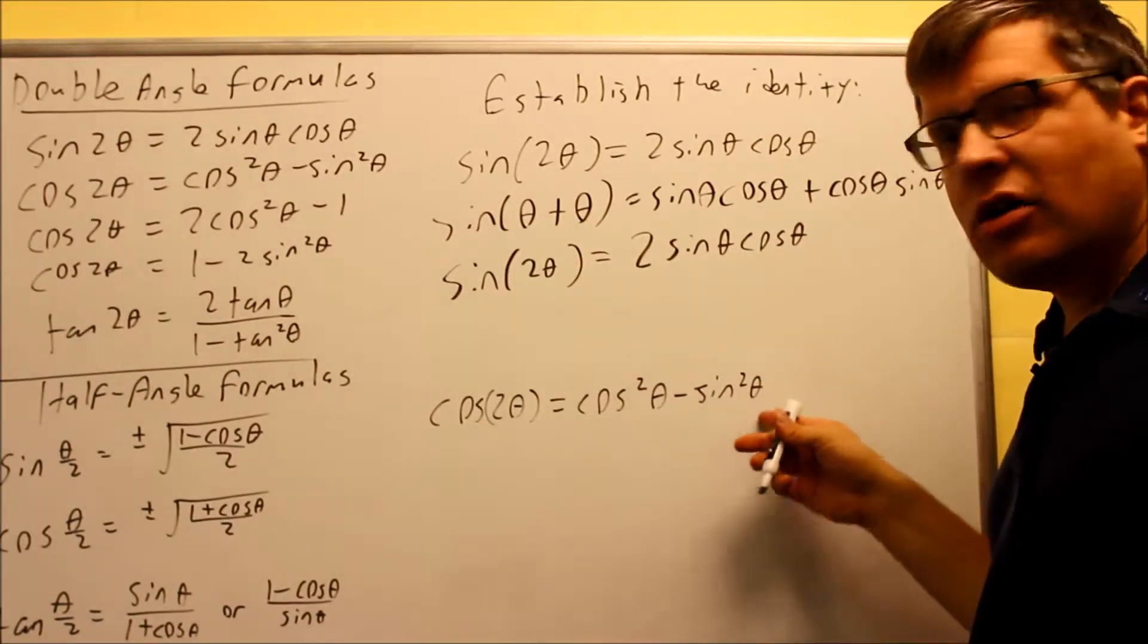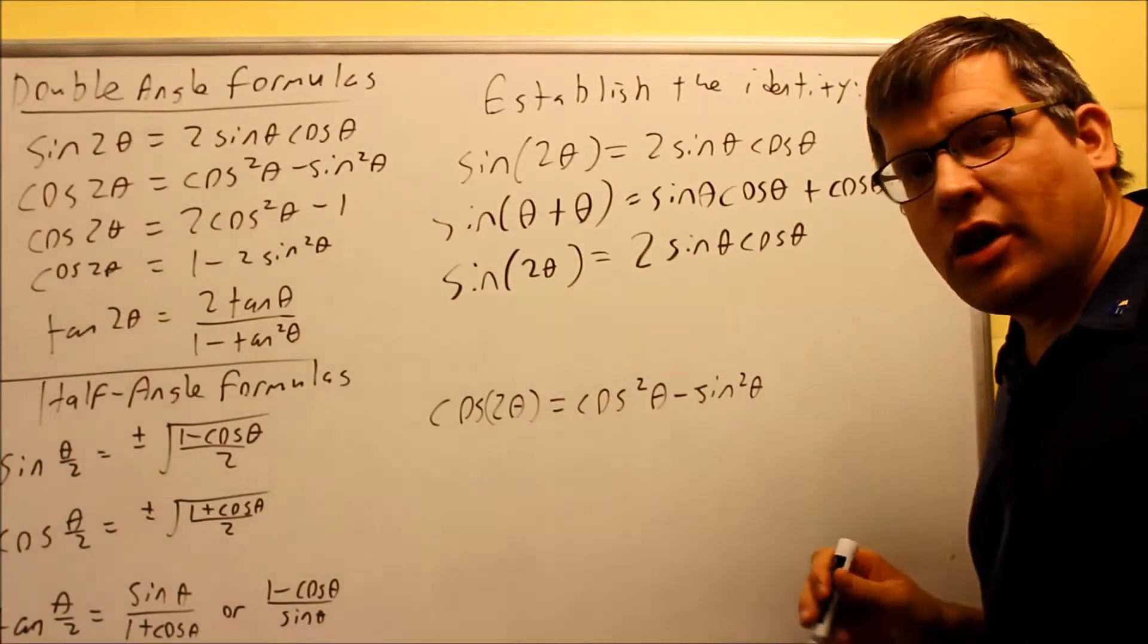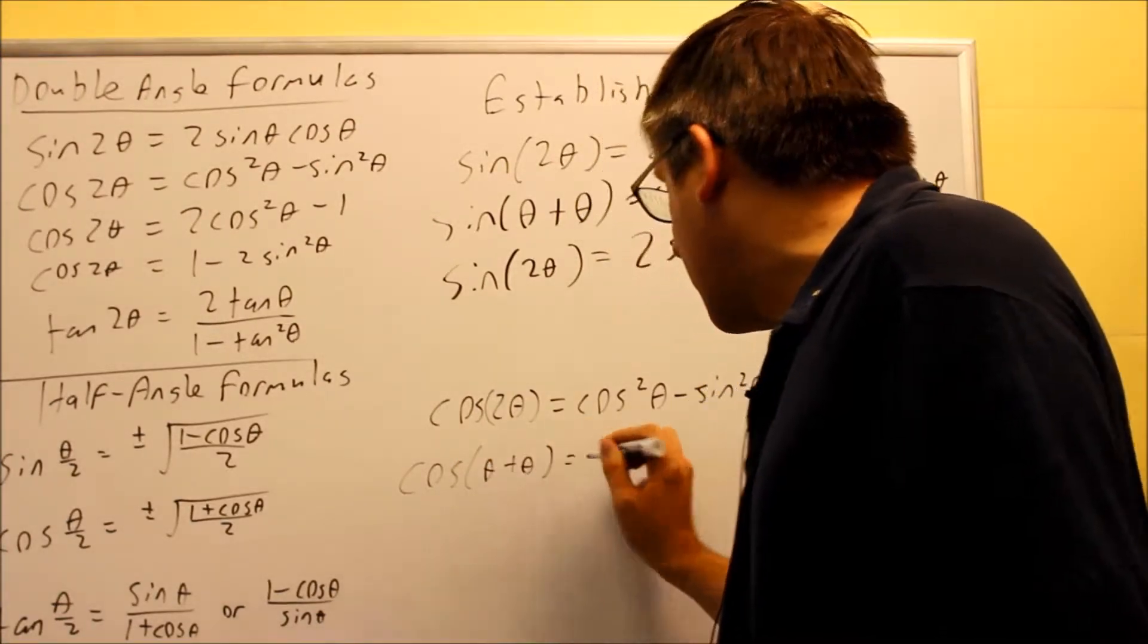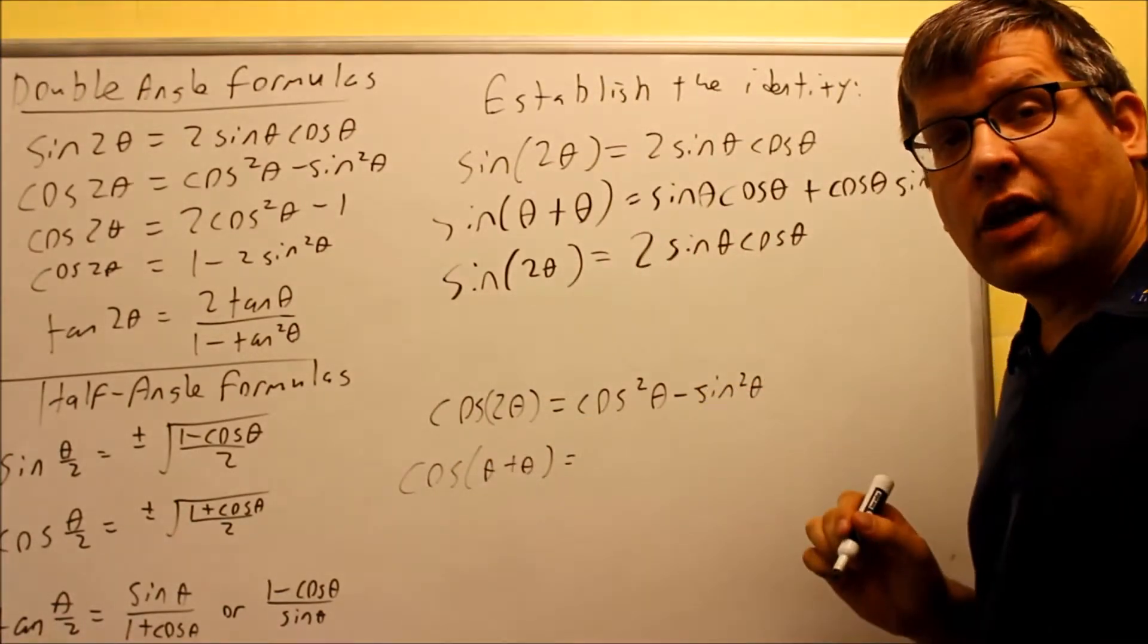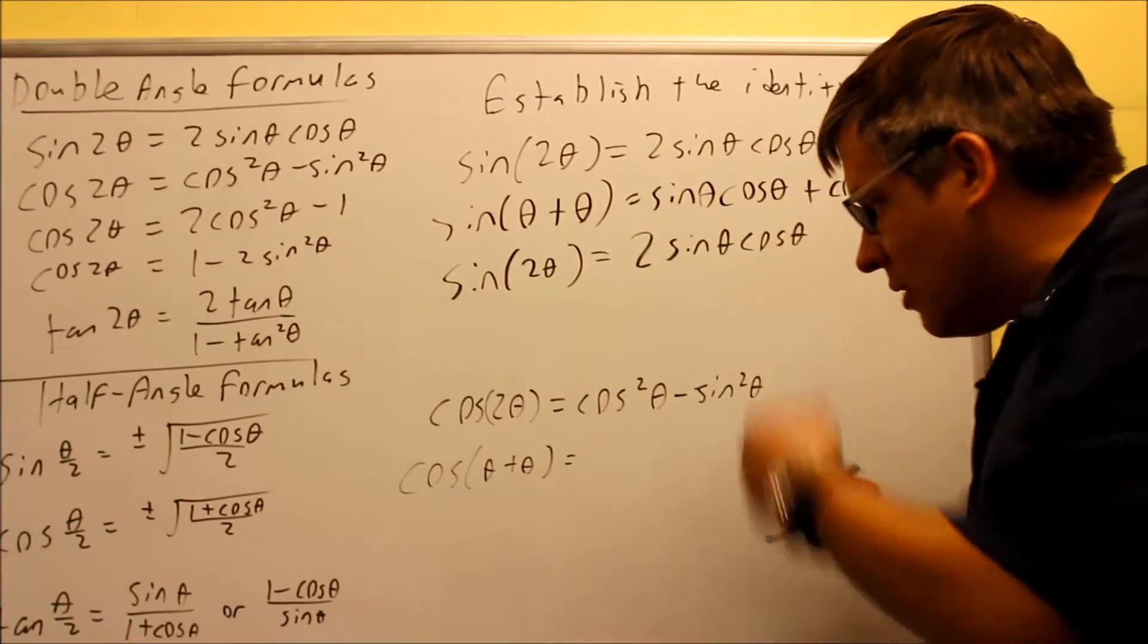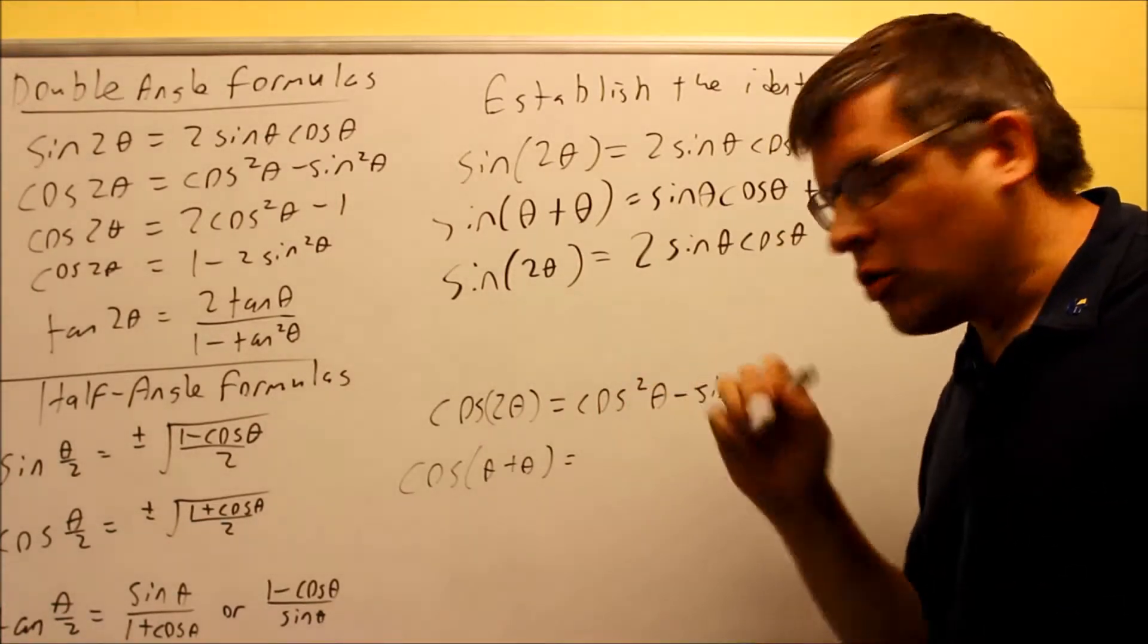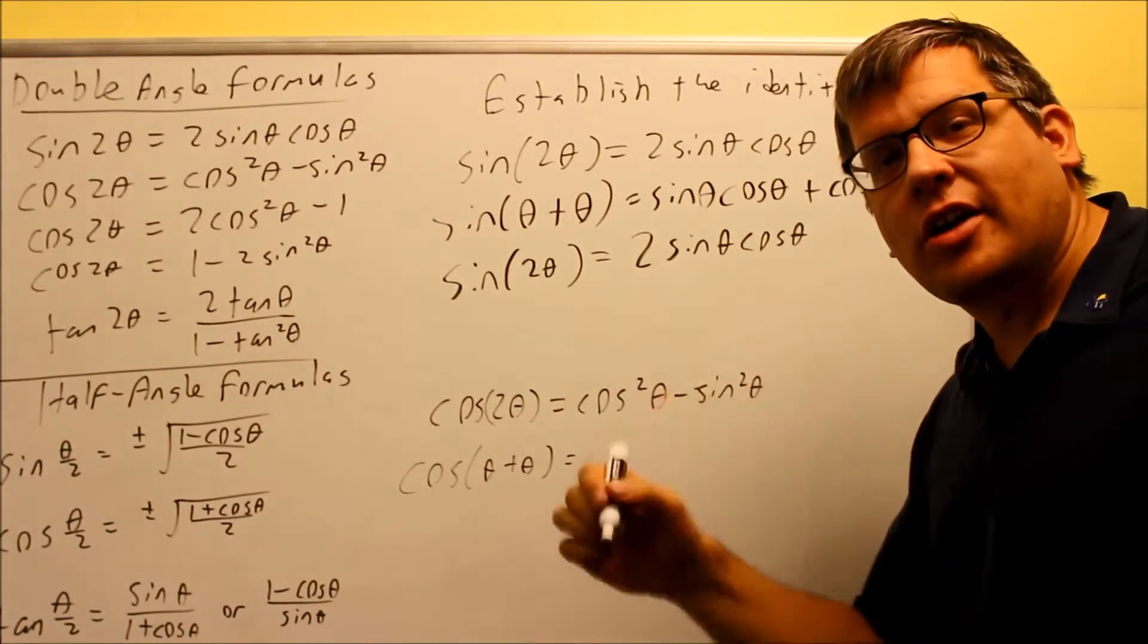Now I'm going to do the same thing down here for cos(2θ). Again, I'm going to do cos(θ+θ). And then that's cos(x+y). That formula is going to be cosine cosine minus sine sine. So cos(x), cos(y) minus sin(x), sin(y).